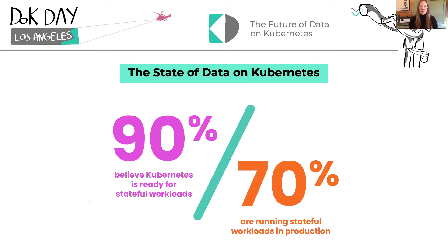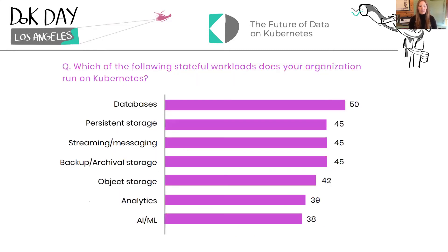In this next section, we sharpen our focus to look at data on Kubernetes rather than overall Kubernetes usage. When we start looking specifically at DOK, it's clear that enterprises are confident that Kubernetes is ready to run their organization's stateful workloads in production — 90% believe this is true and 70% are already doing so. Databases take the top spot, with persistent storage, streaming messaging, backup, and archival storage all tying for second. Overall, as you can see, it's pretty distributed, and they intend to grow this footprint.